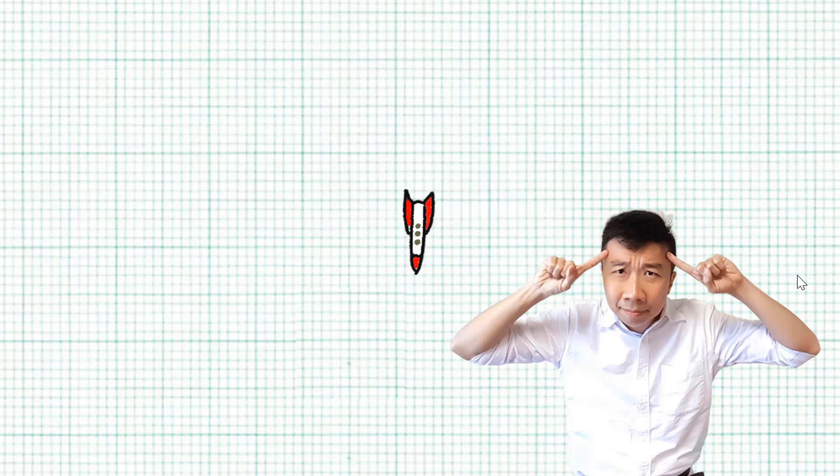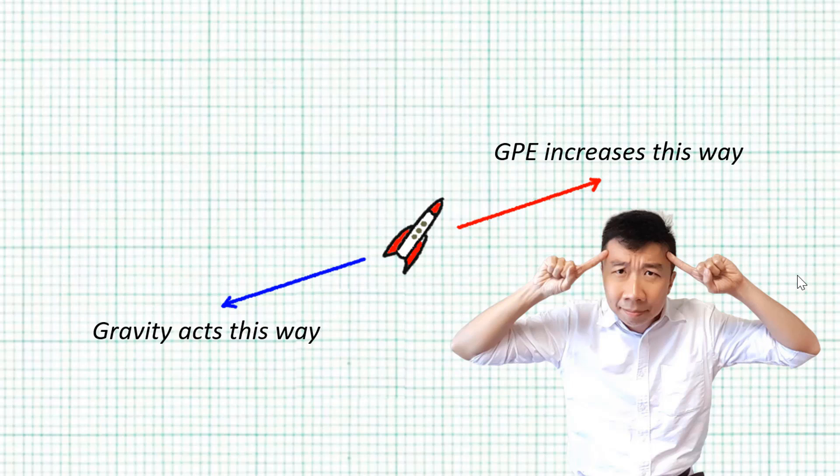Suppose you are in a spacecraft and for some reason nobody can tell which direction gravity is acting. Then somebody says, hey our GPE increases if we go this way. And then you say, aha, I know gravity must be acting in the other way. How did you know? Well if gravity didn't act this way, why would the GPE increase the other way in the first place?